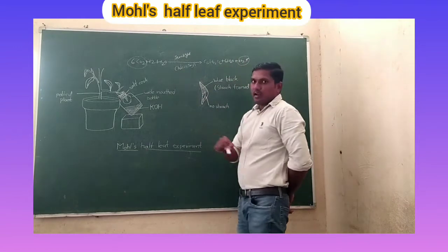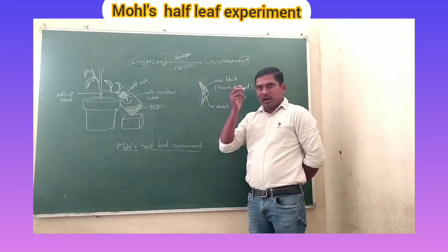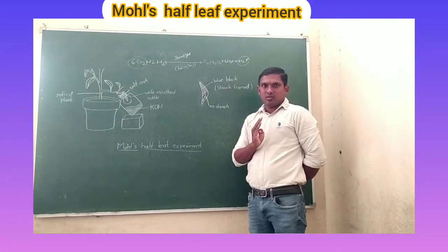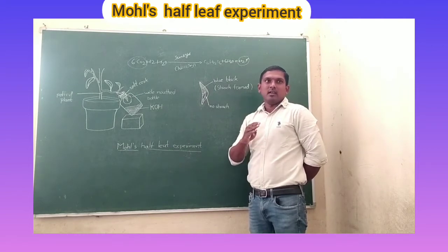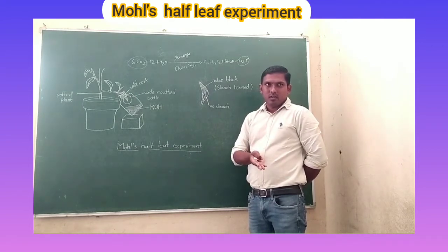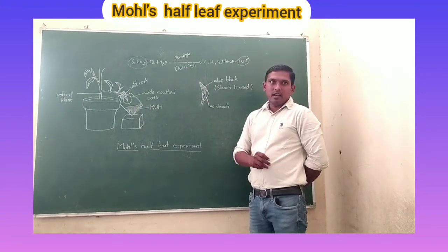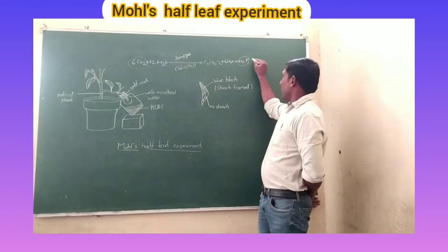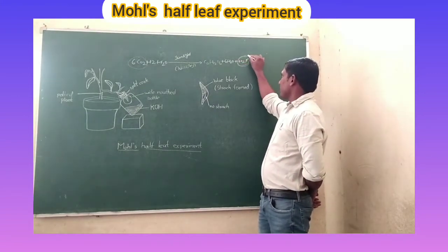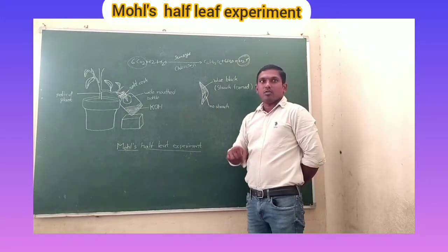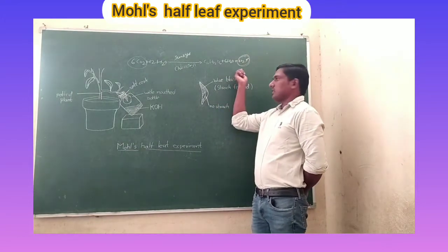Plants carry out photosynthesis and take up carbon dioxide. So how should we believe this? The purpose of this lab activity is that we can see oxygen will be differentiated with the process. How can we confirm the photosynthesis process? This is the purpose of the lab activity.